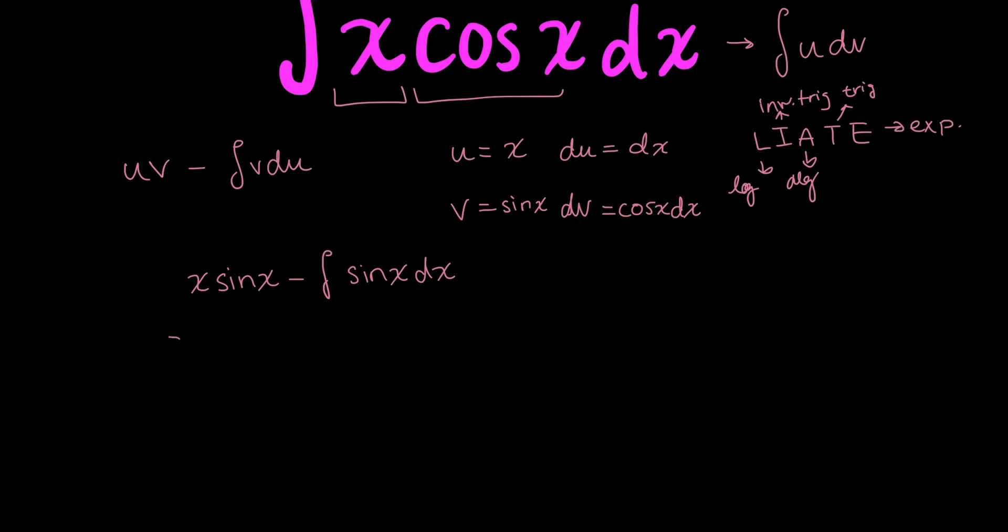And then, this could be simplified as x sine x. The integral of sine x is going to be minus cosine x. And then don't forget your arbitrary constant, plus c. I'm going to rewrite this as x sine x plus cosine x plus c. And that is it.